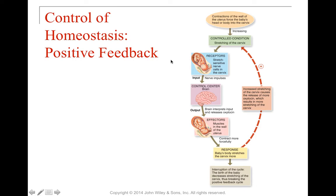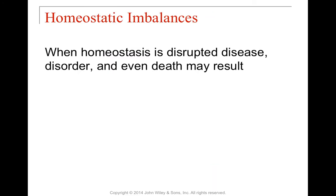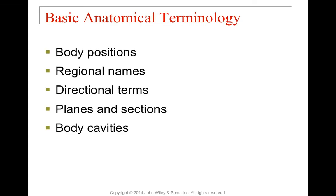Generally what you'll see are negative feedback loops. Anytime homeostasis is disrupted and we can't bring it back into normal parameters, we can end up with disease, disorder, and eventually even death. It's very important to maintain homeostasis. If we have a homeostatic imbalance and know how to treat it, we can add medicines — like insulin — to our regimen. But if we cannot control it, we can end up in pathological conditions.